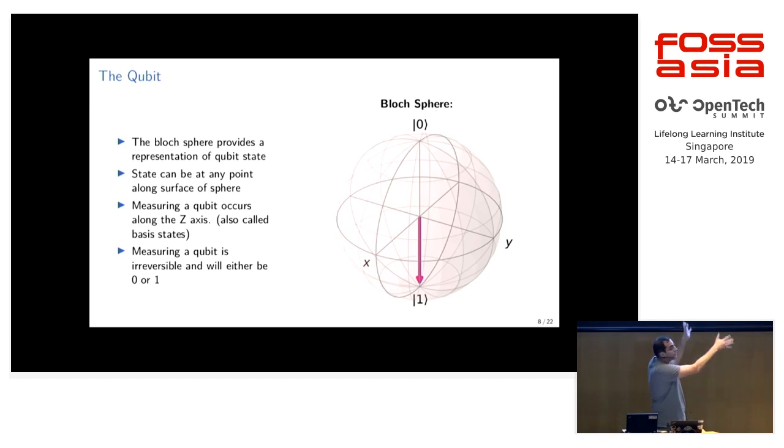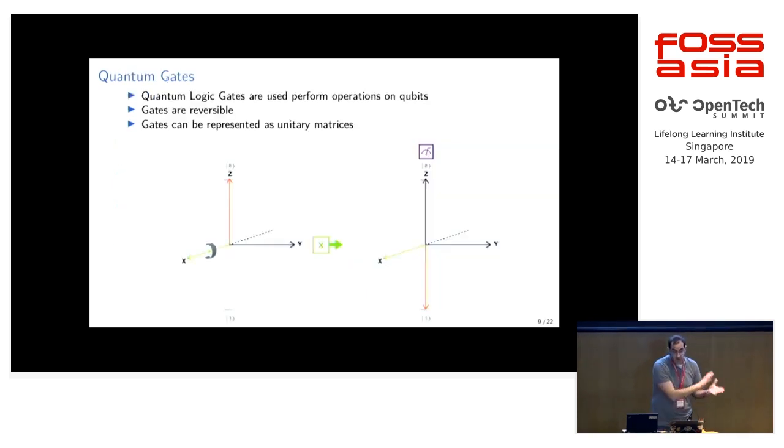When you measure, you lose all of the other information. If it's pointing somewhere else on the sphere, you get a zero or one out, and it's not recoverable after you measure. You perform operations on the qubit with what are called quantum logic gates. The example I have here is the X gate, also called the quantum NOT gate. It's the simplest one to think about. You can think of it as a 180 degree rotation over the X axis. So if it's pointing up at the zero, it would just rotate down to point down to one, which is why it's a NOT operation. A zero becomes a one. And if you do it again, it goes from one to zero.